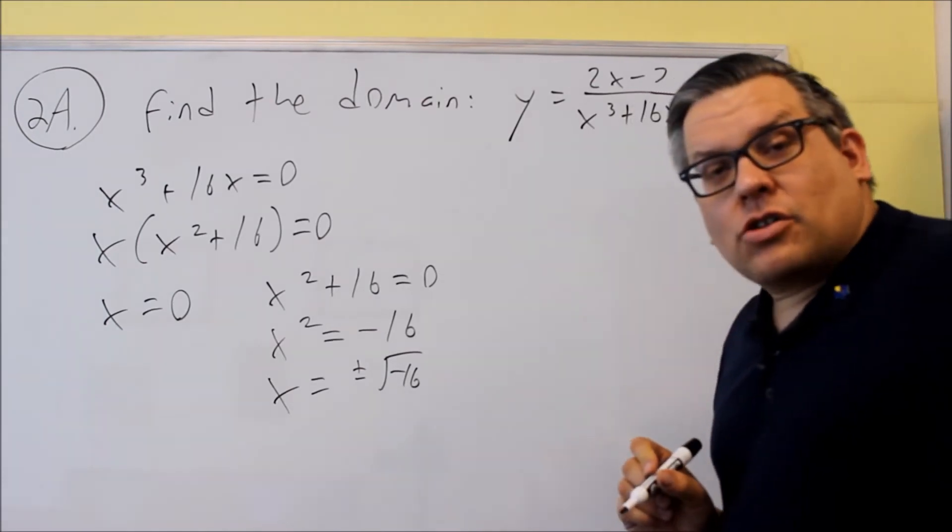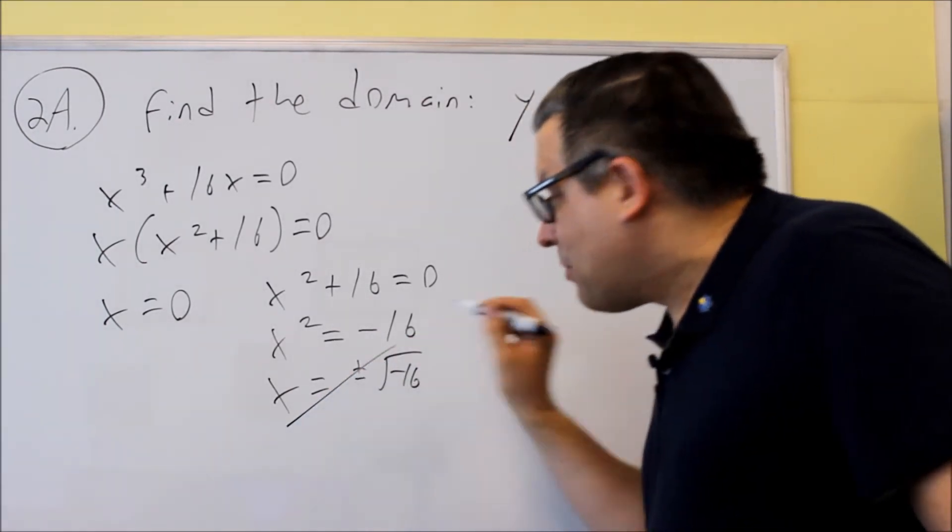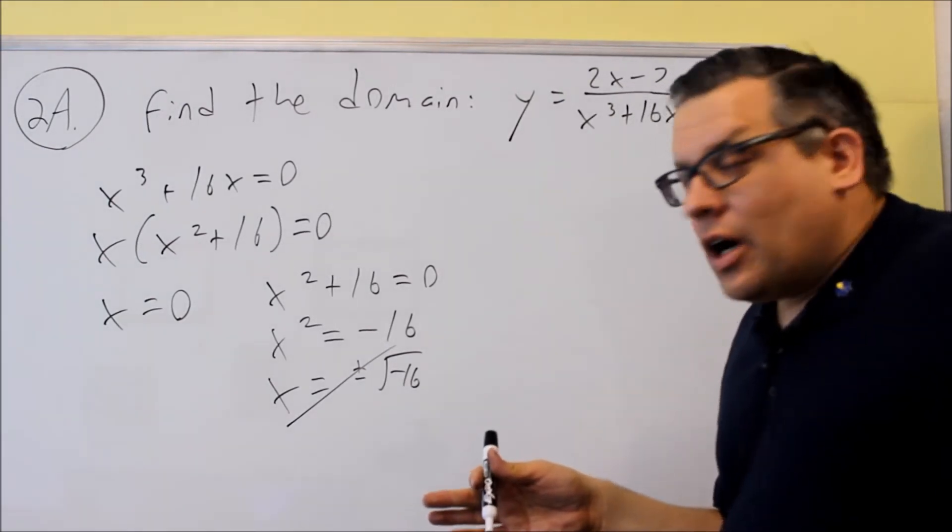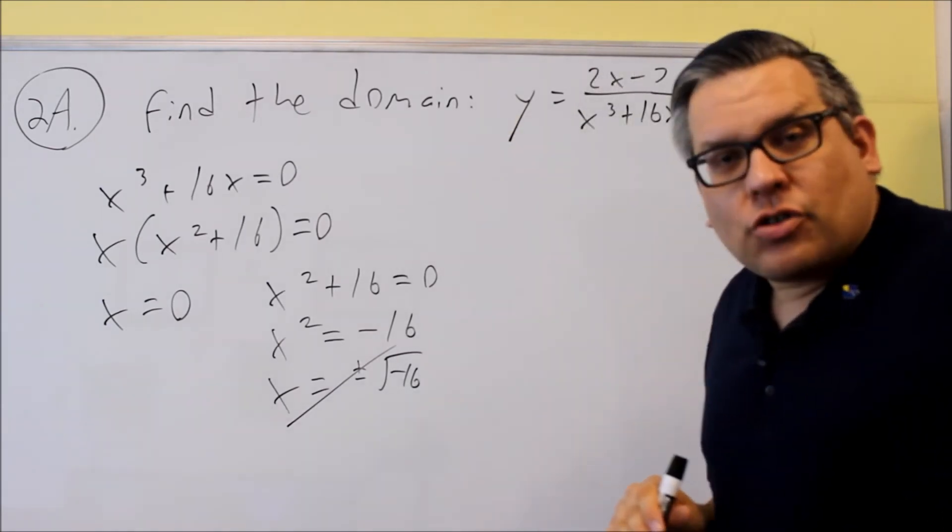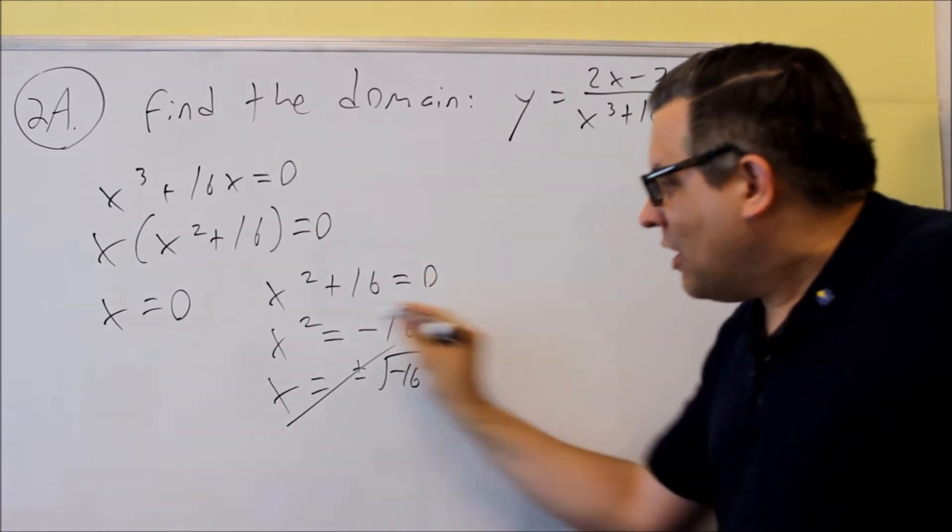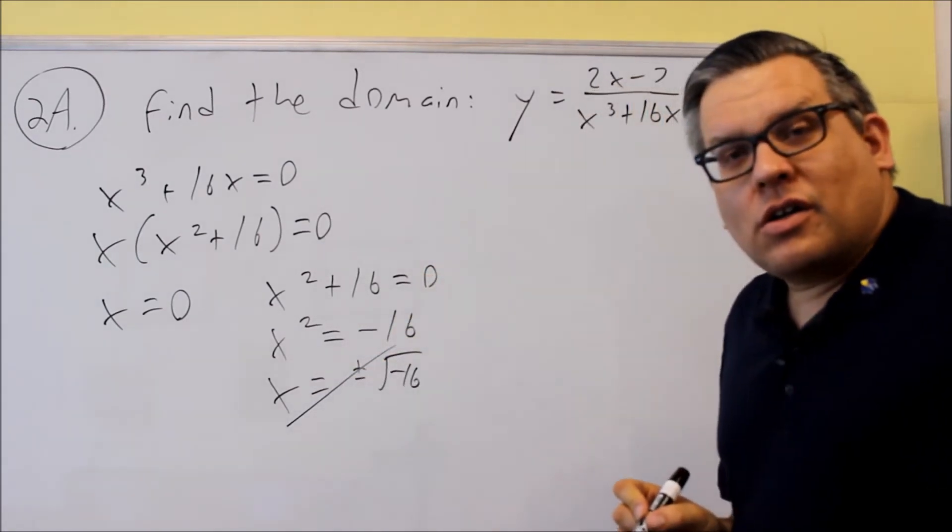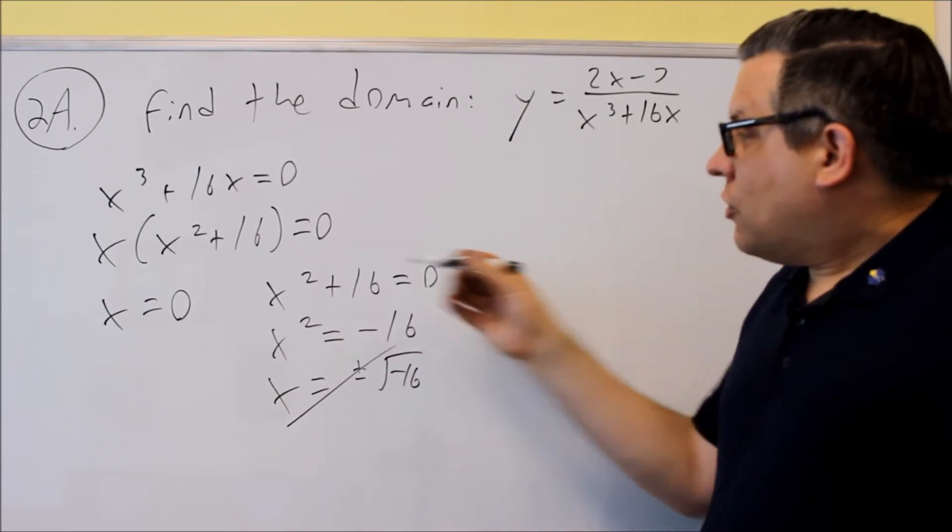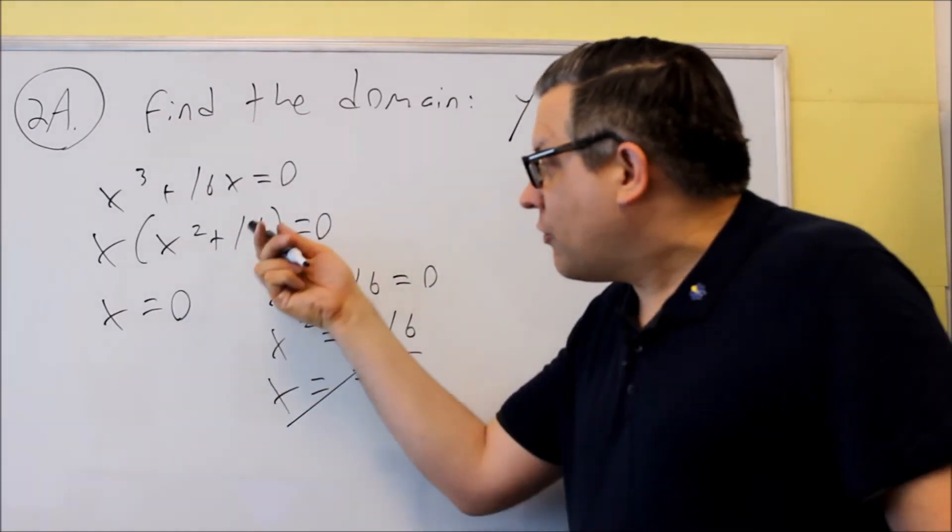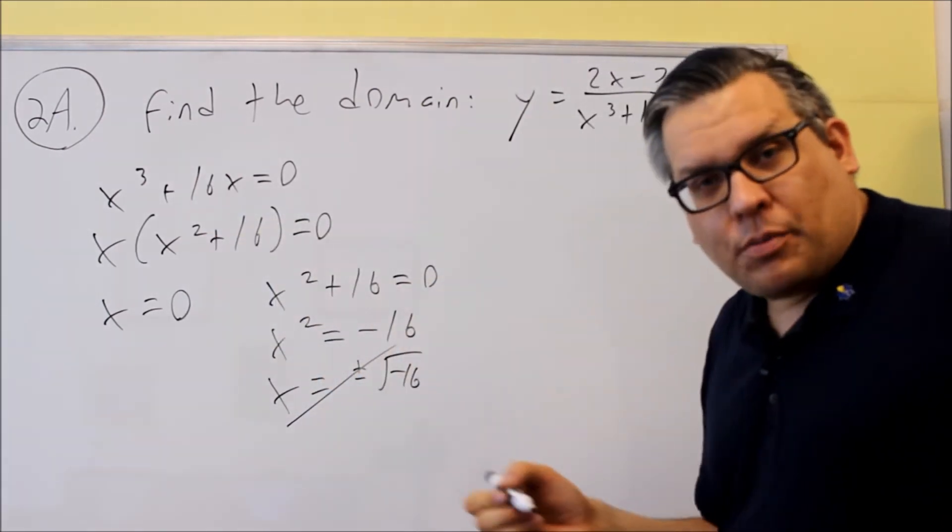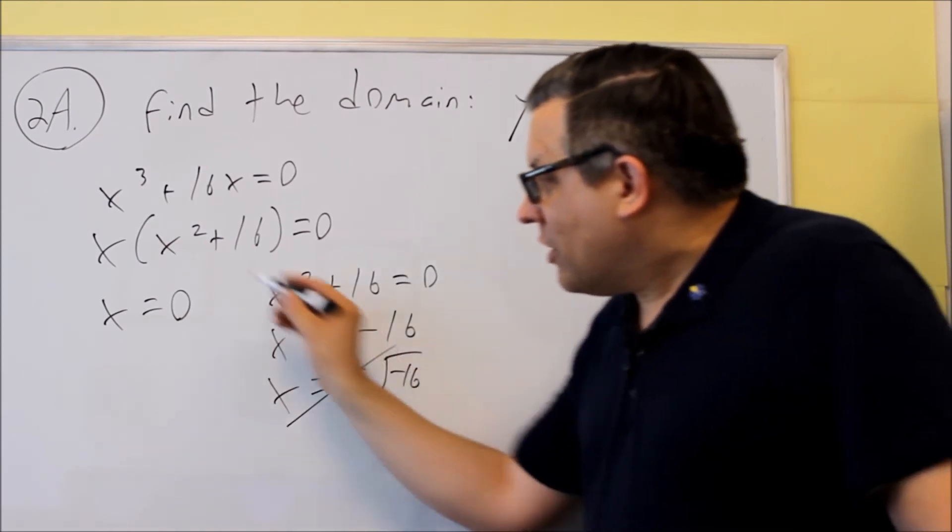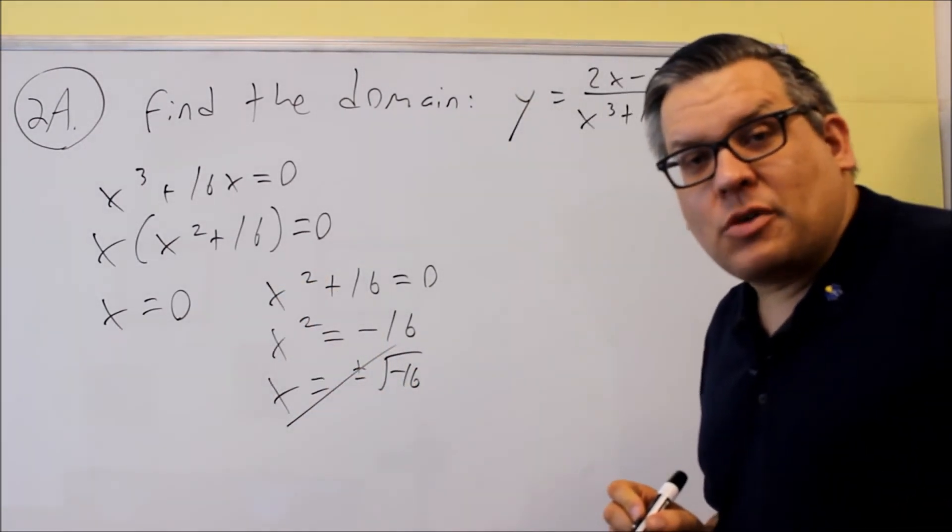Because I get an imaginary number here, that means that it's actually not possible for that to happen. So our domain, we never have to worry about any kind of imaginary numbers on this. Because of that, there's not a real number that allows this particular part to equal zero. If you think it might be four or negative four, remember there's a plus sign here. So if you put four or negative four in there, negative four squared will give you a positive result. That's why negative four does not work. Therefore, it looks like the only number that we're not allowed to use here is going to be zero.